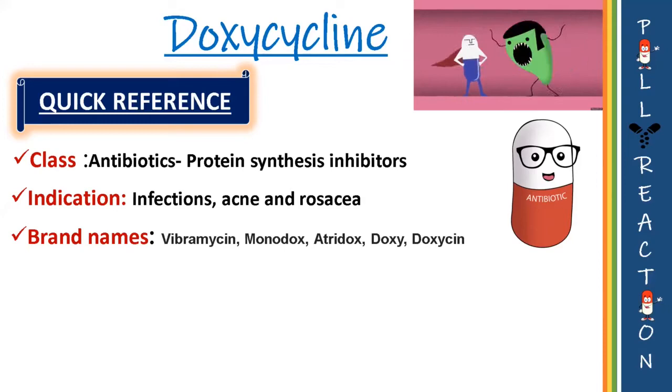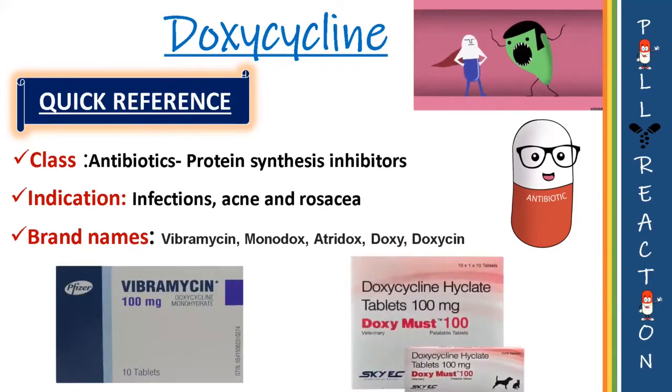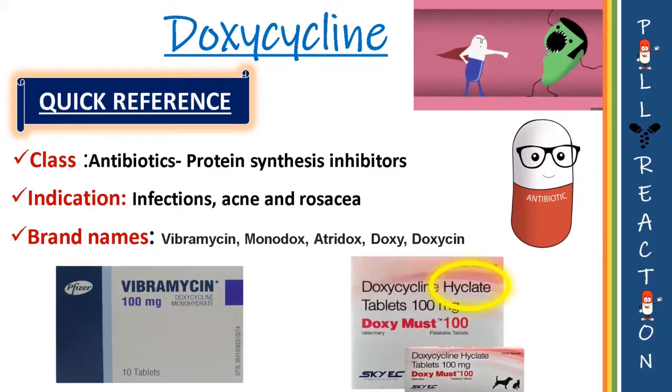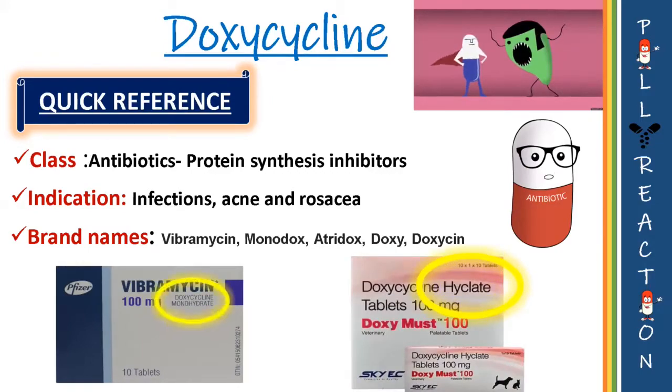The popular brands are Vibramycin, Doxycyc 100, Welldox 100, and Doryx. Doxycycline comes in two different solid forms: hyclate and monohydrate. They're available in capsules, tablets, and even in oral suspensions.